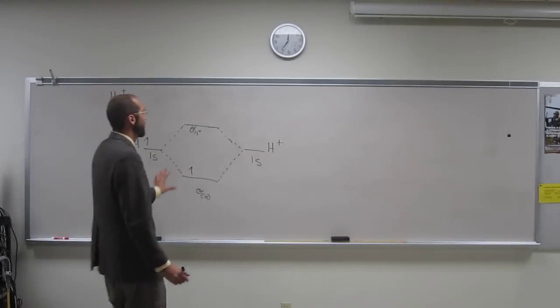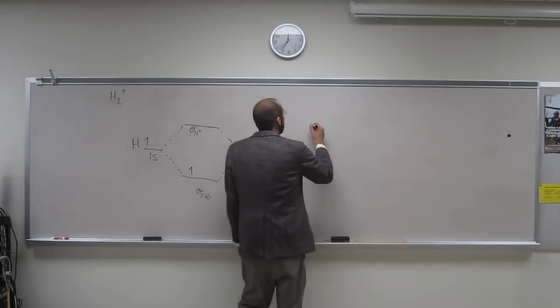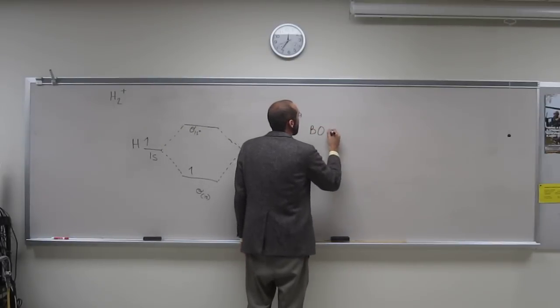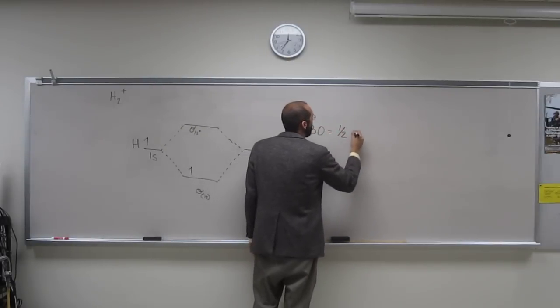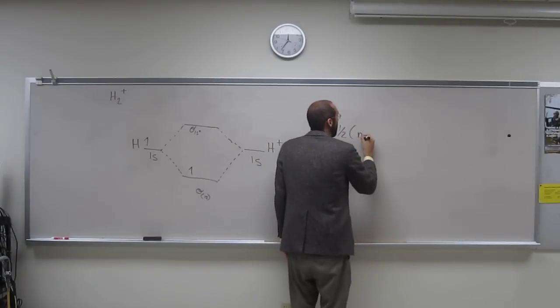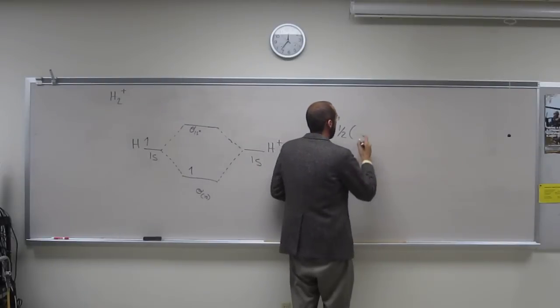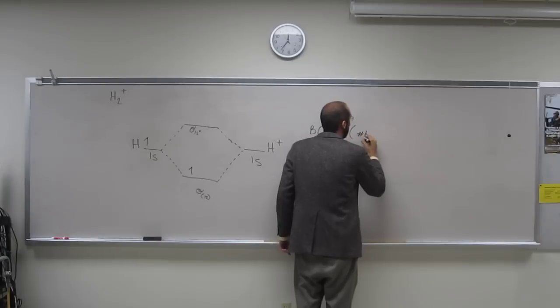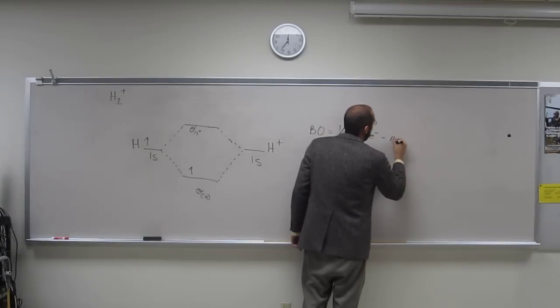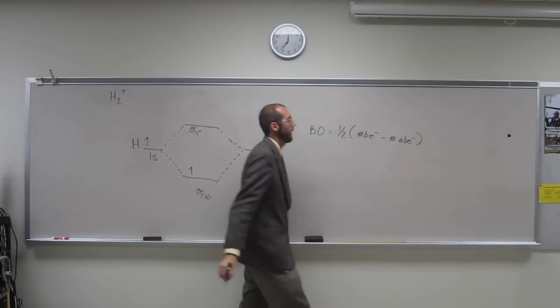So in order to determine whether this molecule will exist or not, we have to figure out the bond order. The bond order is going to equal one-half times the number of bonding electrons minus the anti-bonding electrons. We'll write it out.